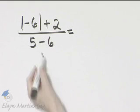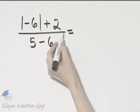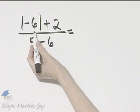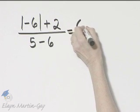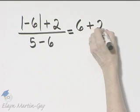In the numerator, I have the absolute value of negative 6 plus 2. Let's evaluate the absolute value of negative 6. It is 6, and then I still have plus 2.